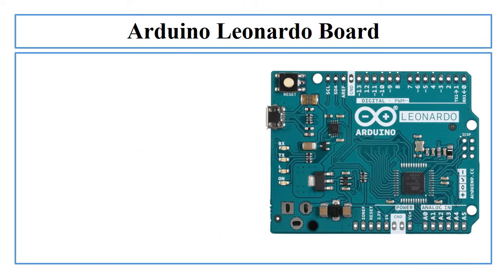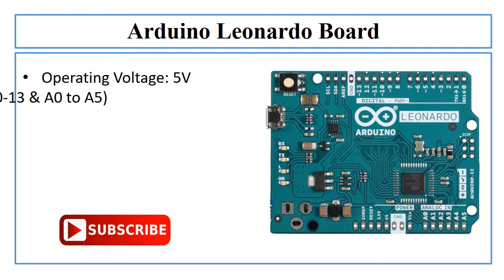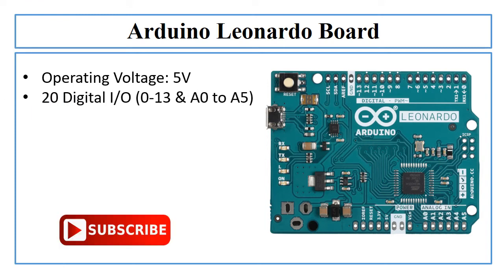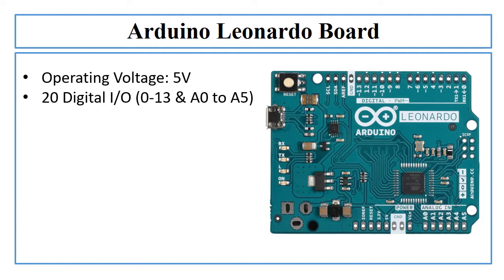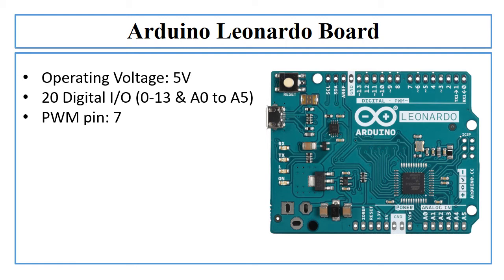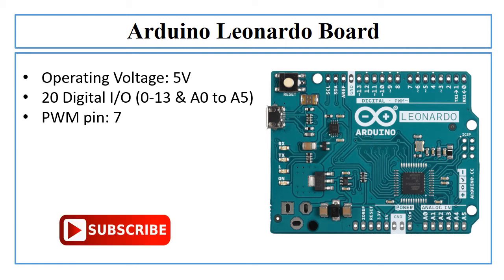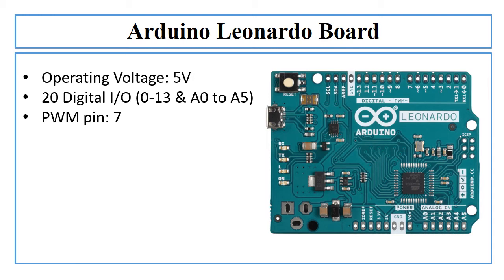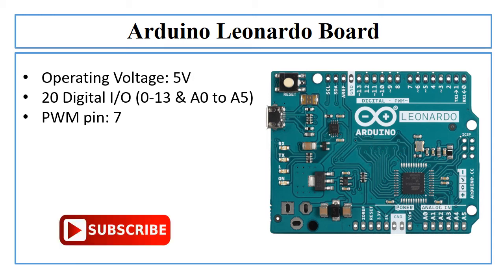The operating voltage of the Leonardo board is 5V. There are a total of 20 digital input-output pins on the Leonardo board. These pins are 0 to 13, and A0 to A5 can also be used as digital pins. There are a total of 7 PWM outputs on the Leonardo board. These pins are pin numbers 3, 5, 6, 9, 10, 11, and pin number 13. The analog input channel count on the Leonardo board is 12.